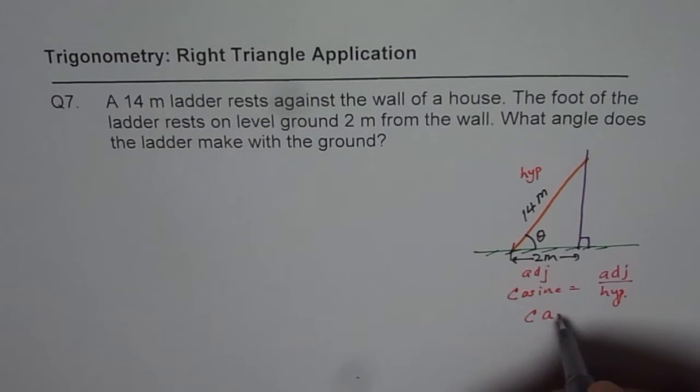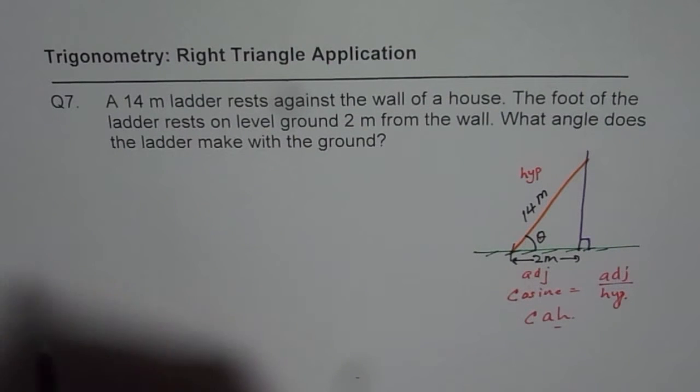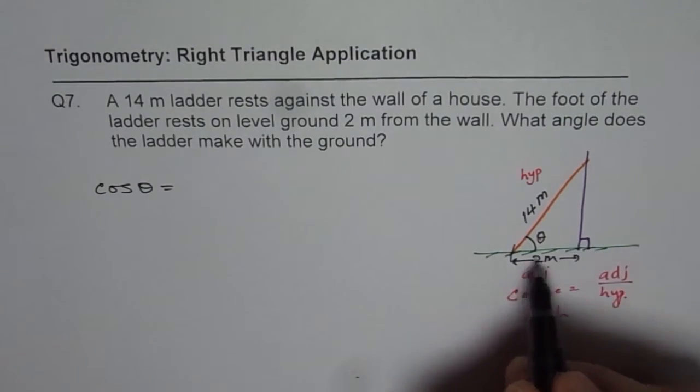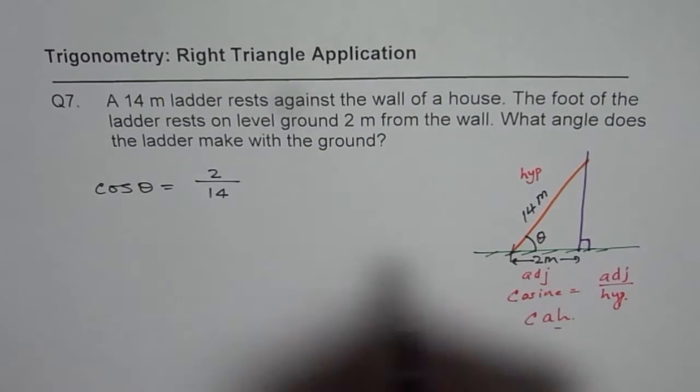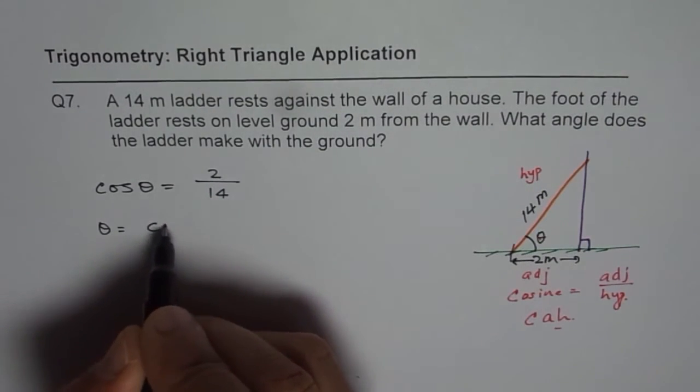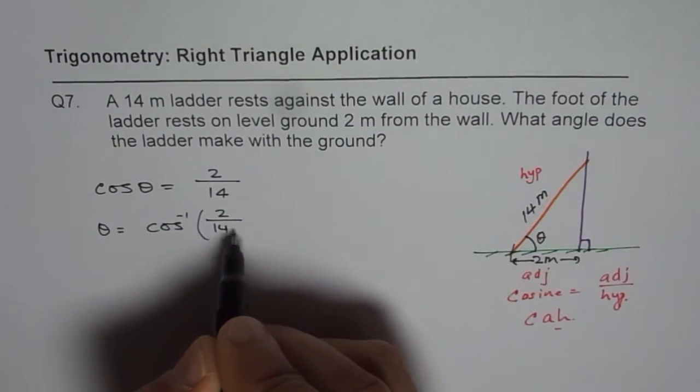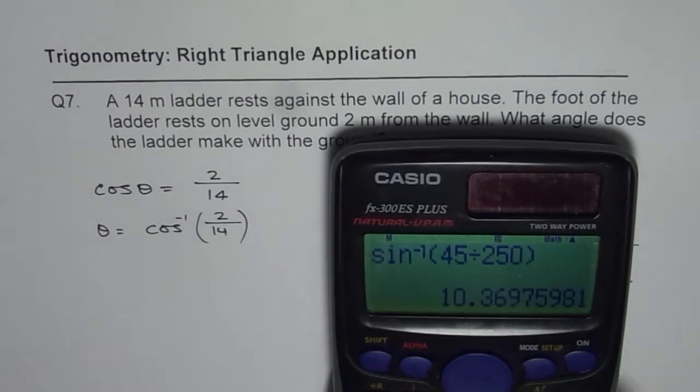Cosine is adjacent over hypotenuse. So let us use cosine and find the answer. We have cos of theta equals to 2 over 14. 2 is the adjacent side, 14 is the hypotenuse. And theta is cos inverse of 2 over 14. There is no need to simplify this since we are using the calculator.